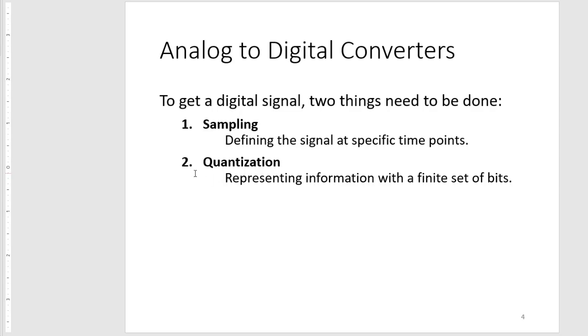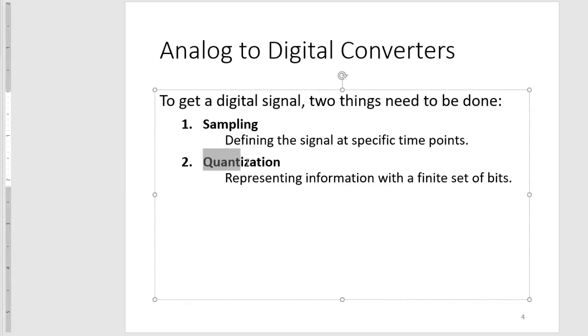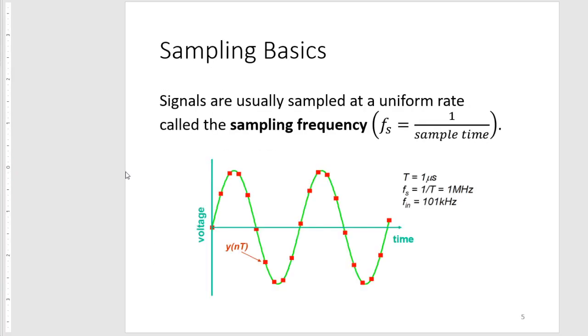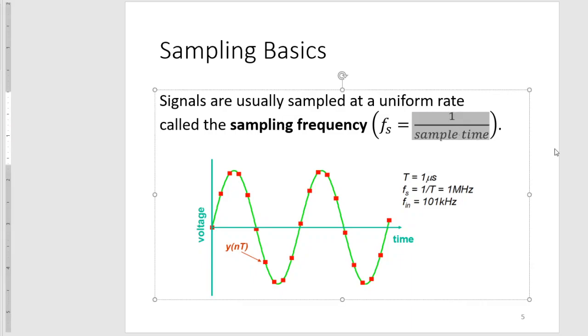When we talked about converting analog to digital quantities in the previous lecture video, it mostly deals with quantization. Sampling, as the name suggests, is picking specific points of your analog signal to represent as digital data. Signals are usually sampled at a uniform rate called the sampling frequency, which is just the inverse of the sample time.